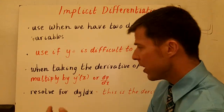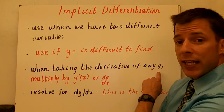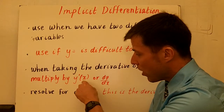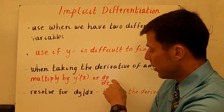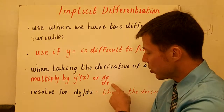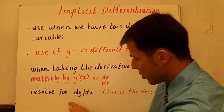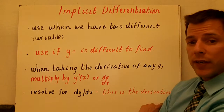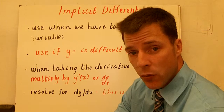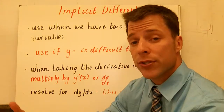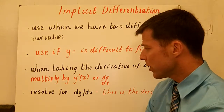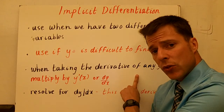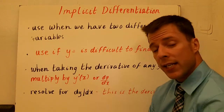A couple key things: when you take the derivative of anything that involves y, you take the derivative normally, but then you have to multiply it by y prime of x, or dy/dx. Then you have to resolve for dy/dx — that would be the derivative, so you're looking for dy over dx equals some function. Remember that when you take the derivative of y, pretend like you're taking the derivative of x, but then multiply it by dy/dx.